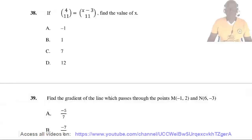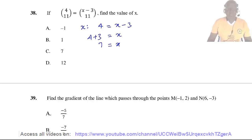Question 38. If the vector (4, 11) equals the vector (S minus 3, 11), find the value of S. Equating the x-components: 4 equals S minus 3. So S equals 4 plus 3, giving S equals 7. The answer is C.